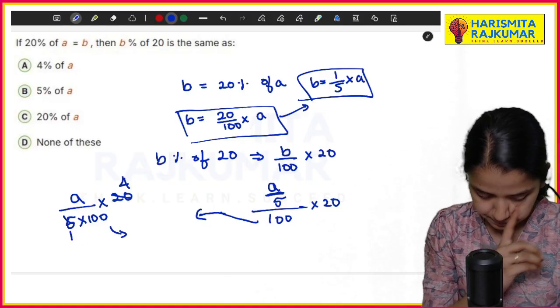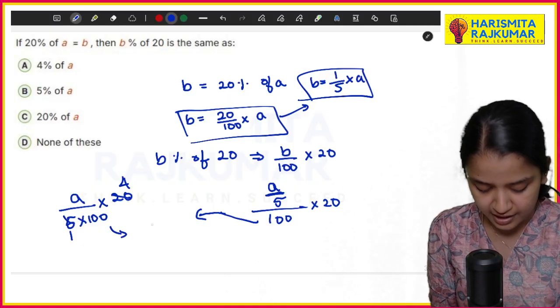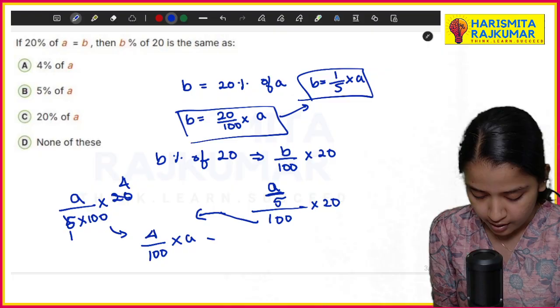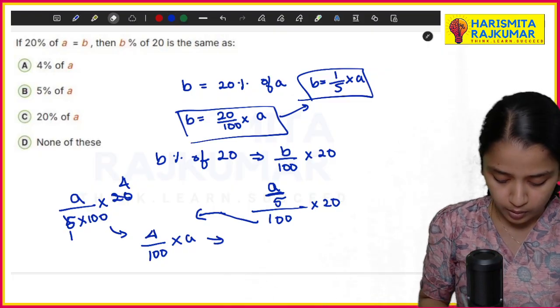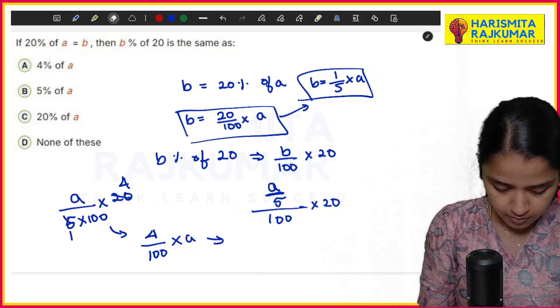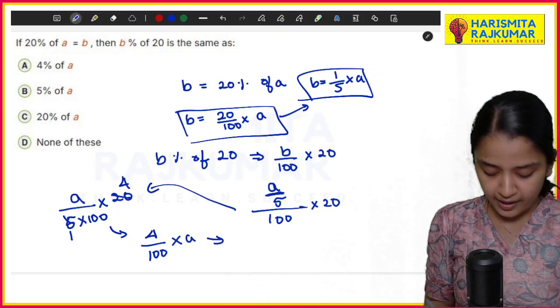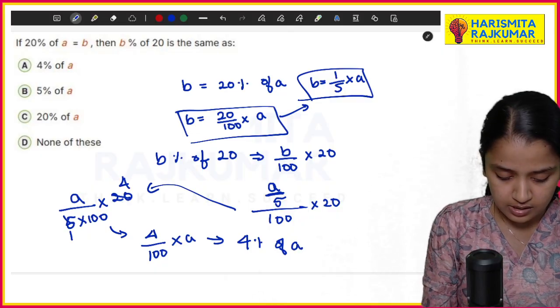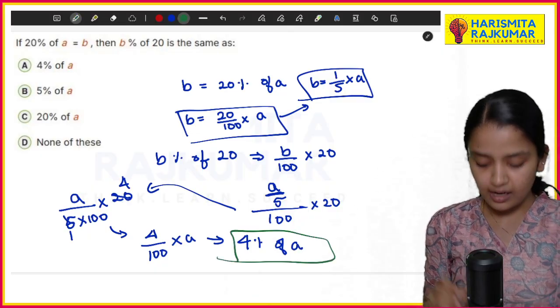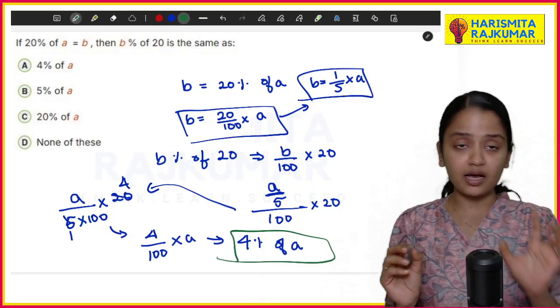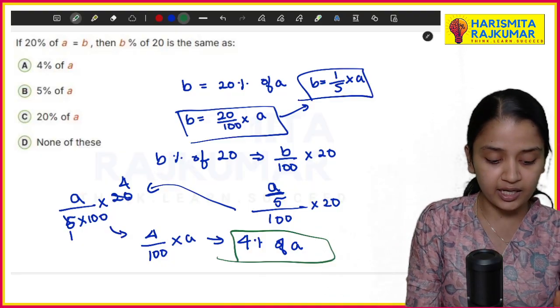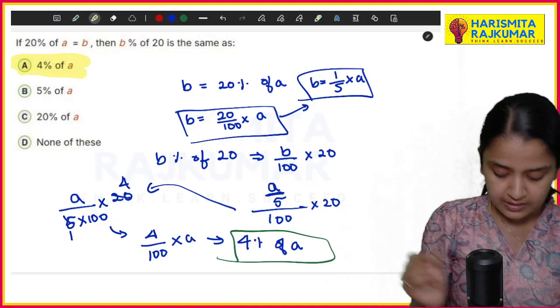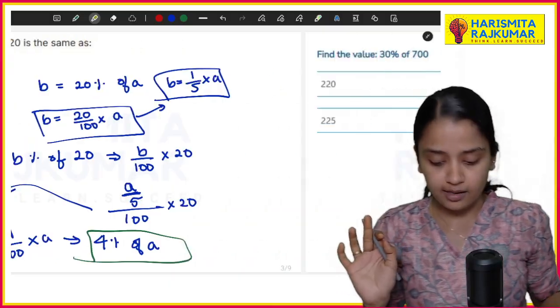So this will be basically I'm just rearranging and writing 4/100 × a. What is 4/100 × a? 4/100 is 4% of a. So this is your final answer. I'm not removing 100 because in the answer itself I've seen percentage is there. So 4% of a is your right answer.